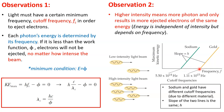Sodium requires less energy to eject an electron because its cut-off frequency is lower, while gold requires higher energy due to its higher cut-off frequency. For low-intensity and high-intensity light beams, each photon carries the same energy. A low-intensity beam has fewer photons while a high-intensity beam has more photons, but each photon carries the same energy at the same frequency.